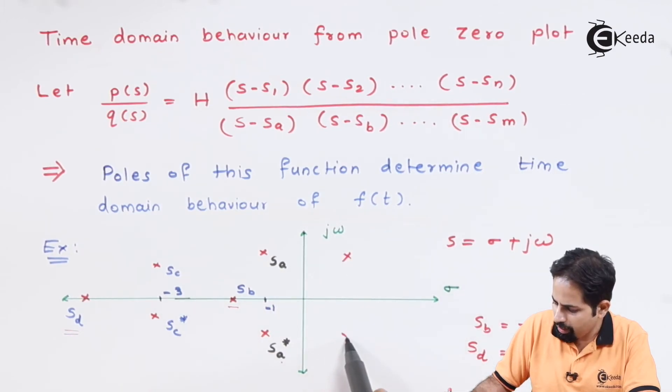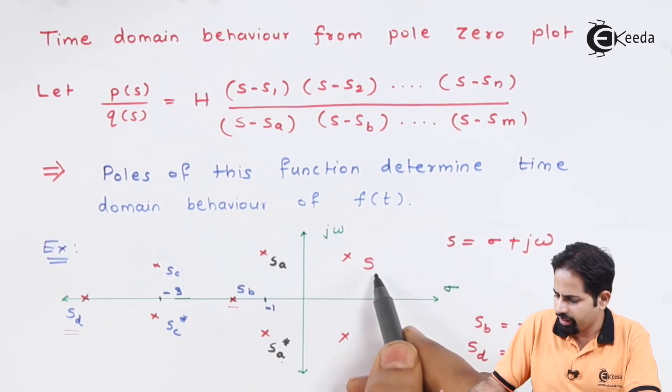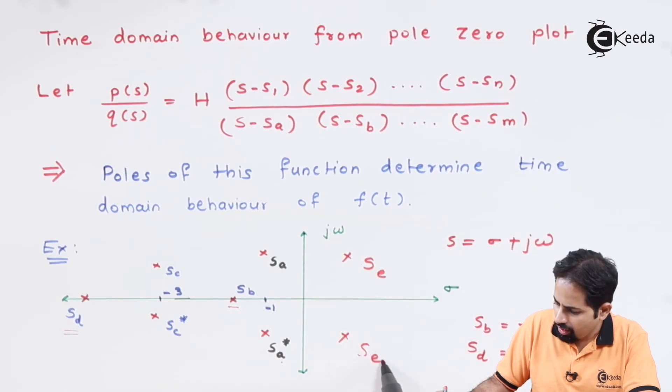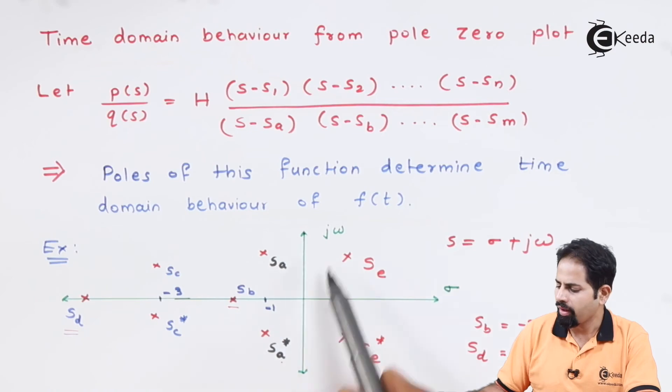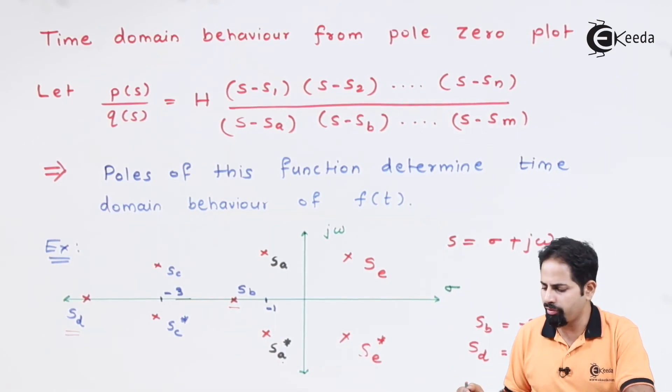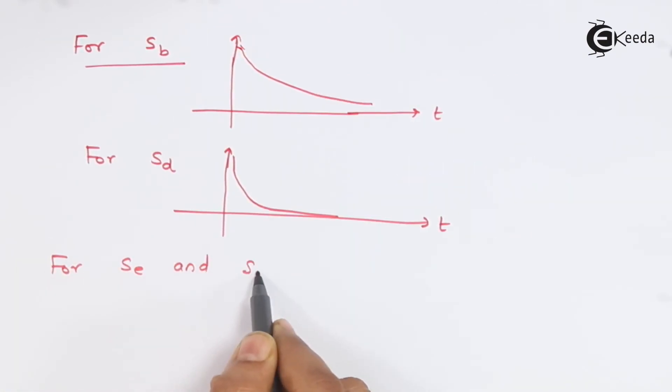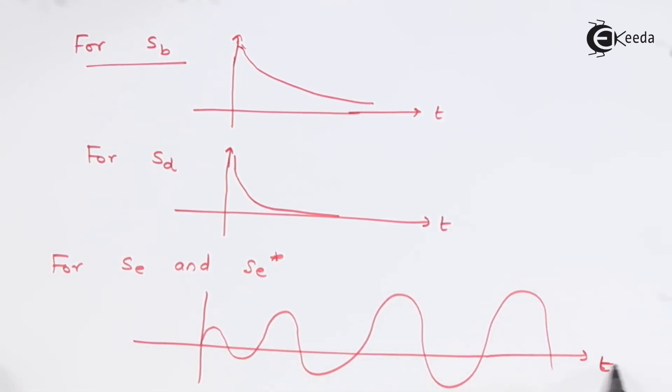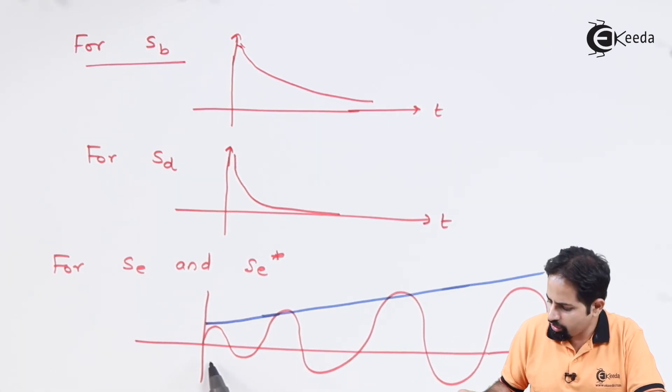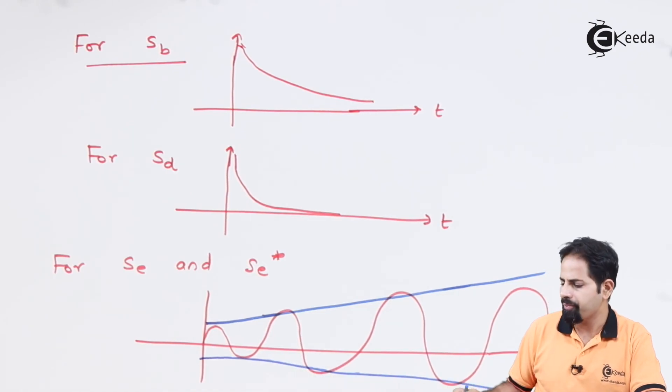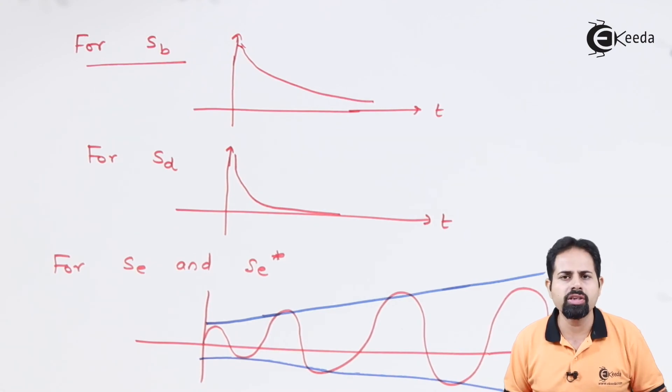Suppose this SA and SA conjugate pair was here, just assume that here there is a pair called SE and SE conjugate. Then this pair would result in time domain behavior like an increasing graph or increasing exponential term where this blue line represents the increasing exponential term. So this is how the time behavior occurs. Here also it is going to increase in this way exponentially increasing graph. So these are all the locations where the time behavior can be studied from the pole zero diagram.